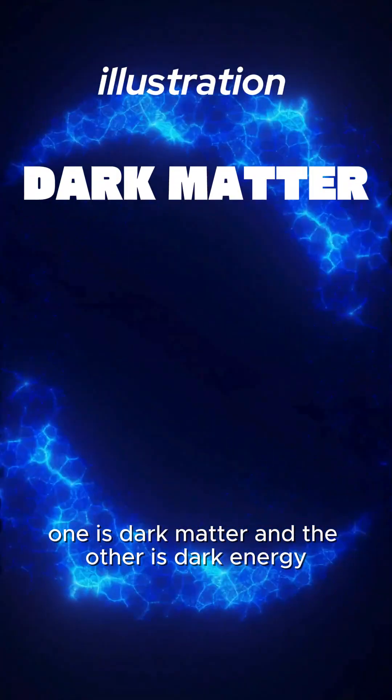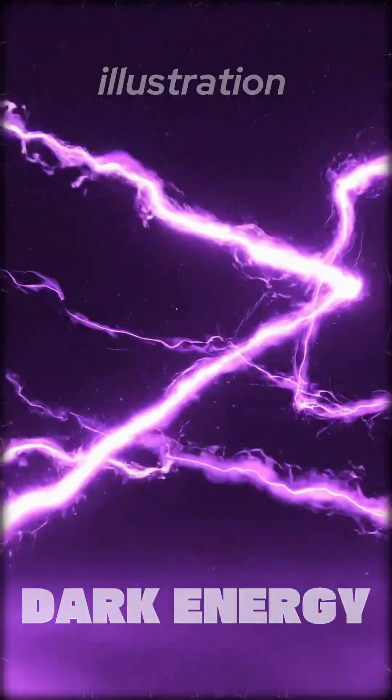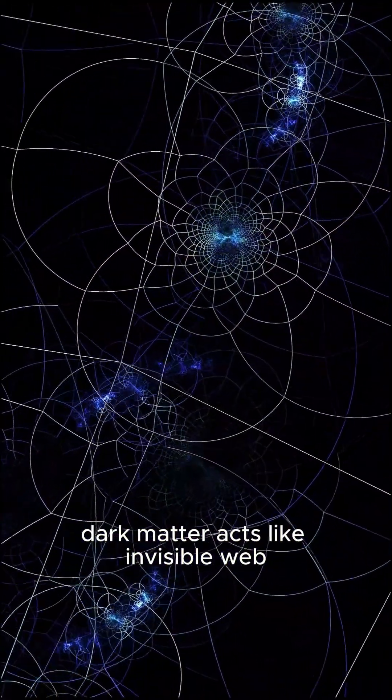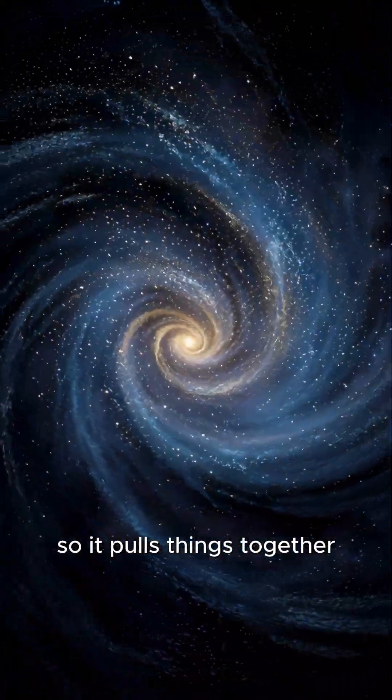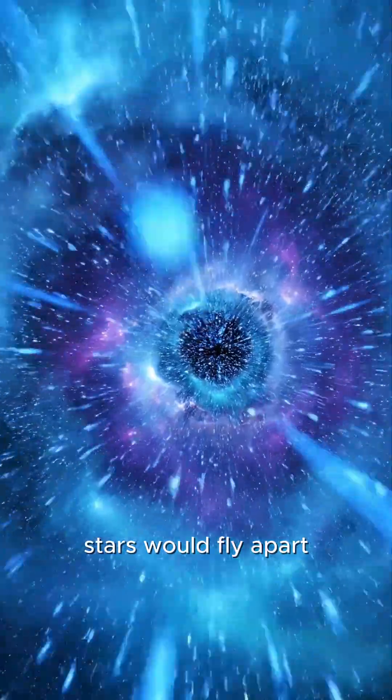One is dark matter, and the other is dark energy. Dark matter acts like invisible web. It has gravity, so it pulls things together. Without it, stars would fly apart.